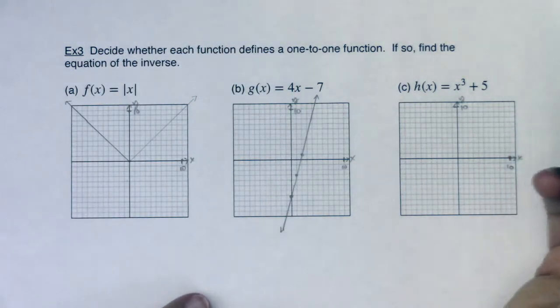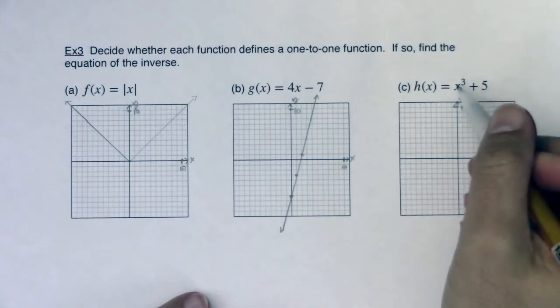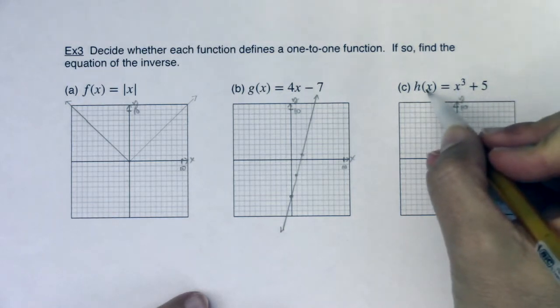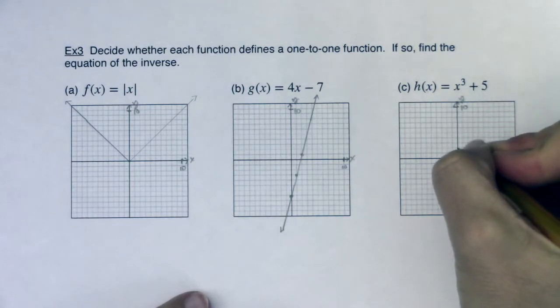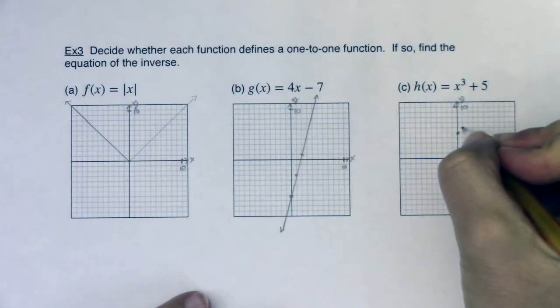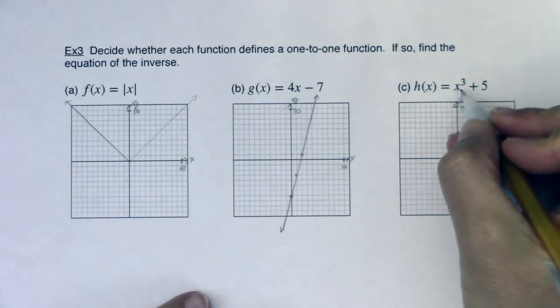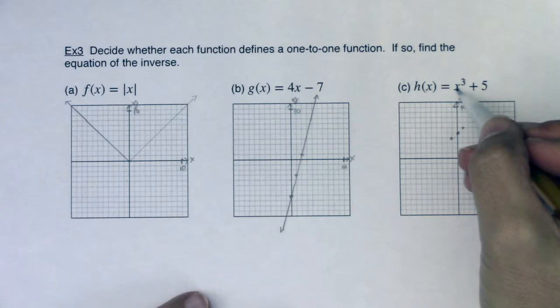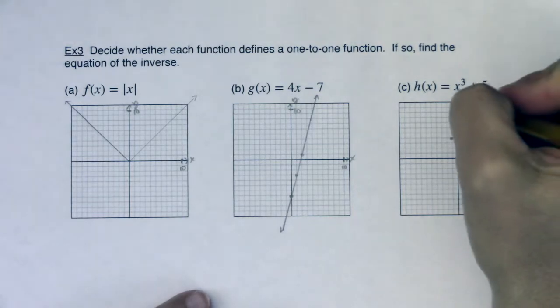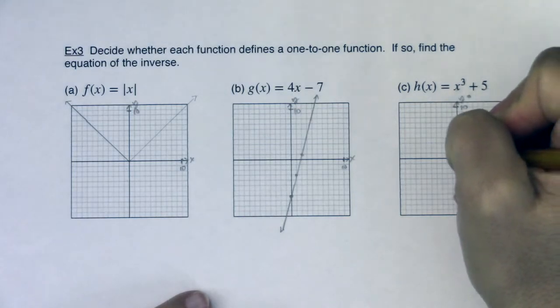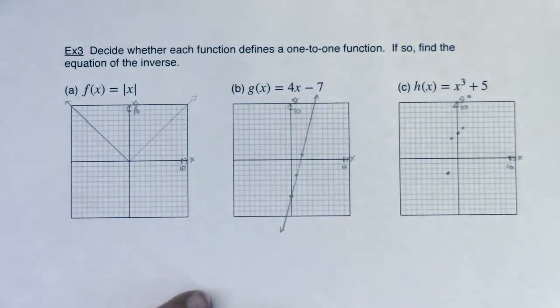Now for x cubed plus 5, if you're not sure how to graph this, you can start plugging in values. I try the nice, easier numbers. If I plug 0 in, h(0) is 0 cubed plus 5, which is 5, so my y-intercept is (0, 5). Let me try plugging 1 in: 1 cubed is 1, plus 5 is 6. Plugging in negative 1: negative 1 cubed is -1, plus 5 is 4. Trying 2 and negative 2: 2 cubed is 8, plus 5 is 13, so it's pretty high up. Negative 2 cubed is -8, plus 5 is -3. Those are the five ordered pairs.